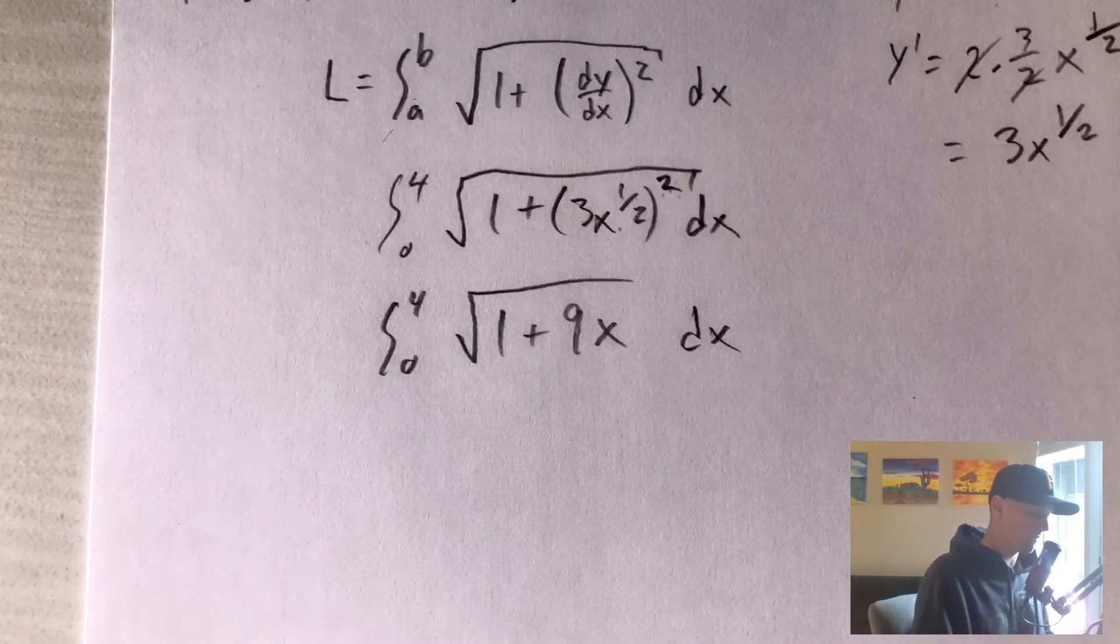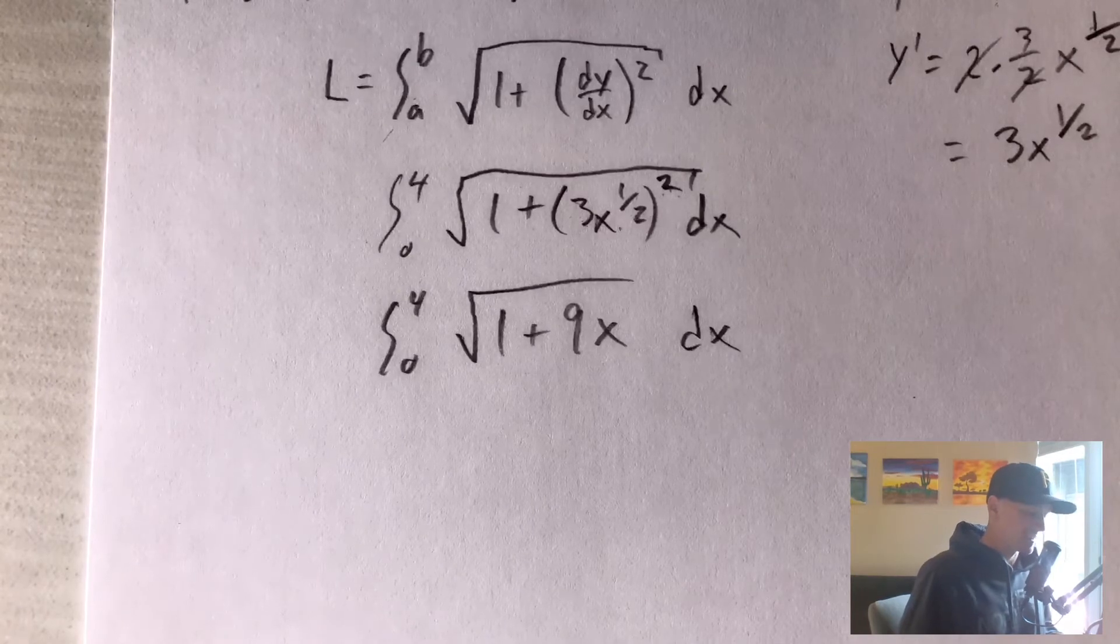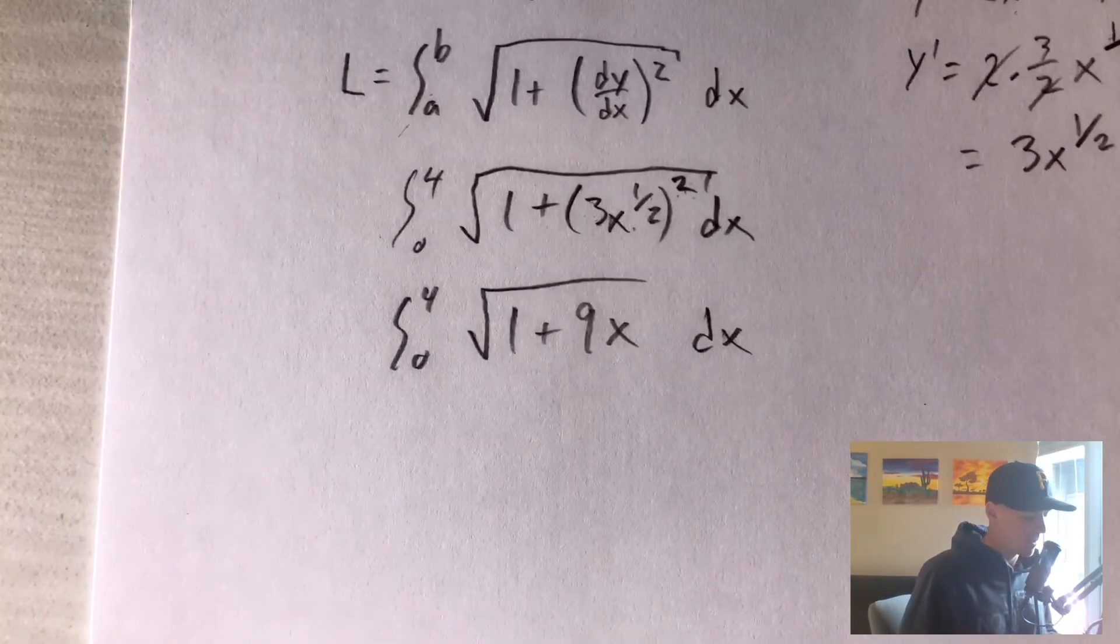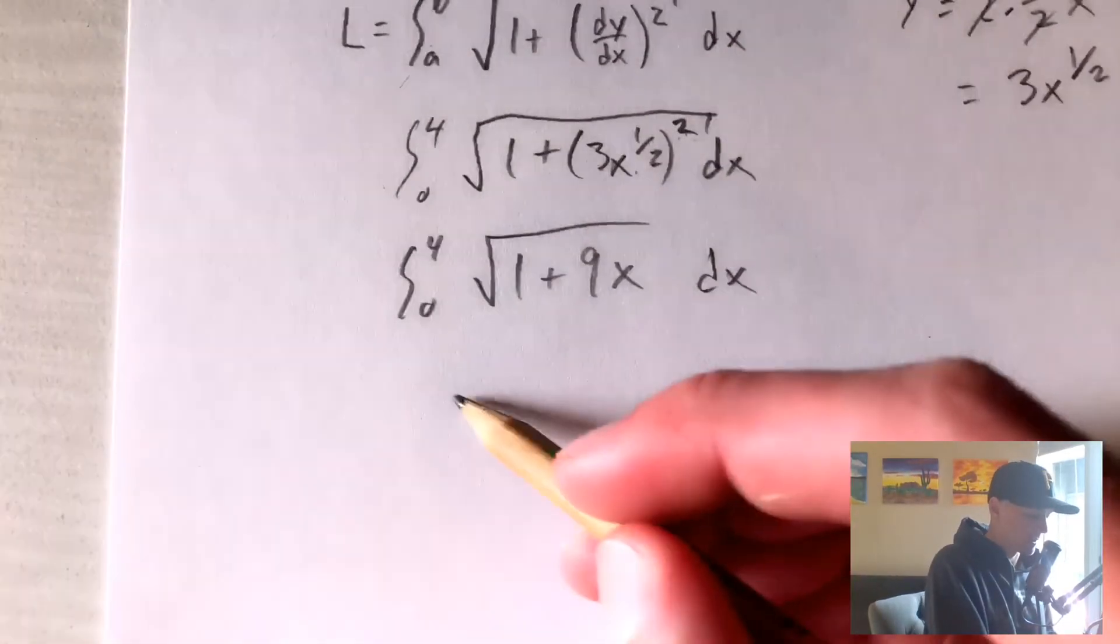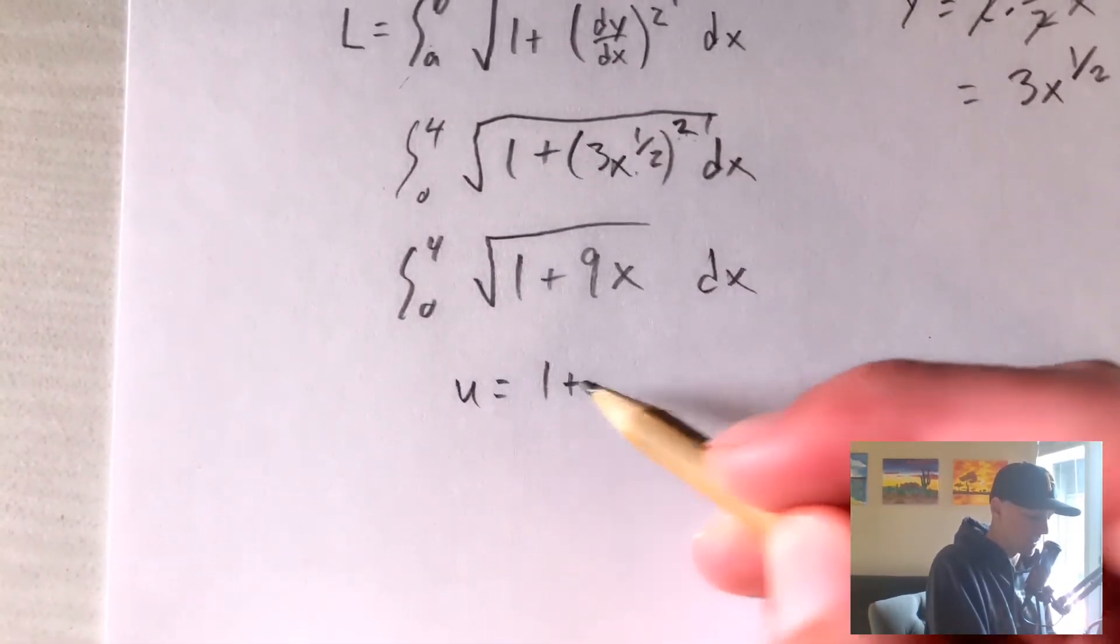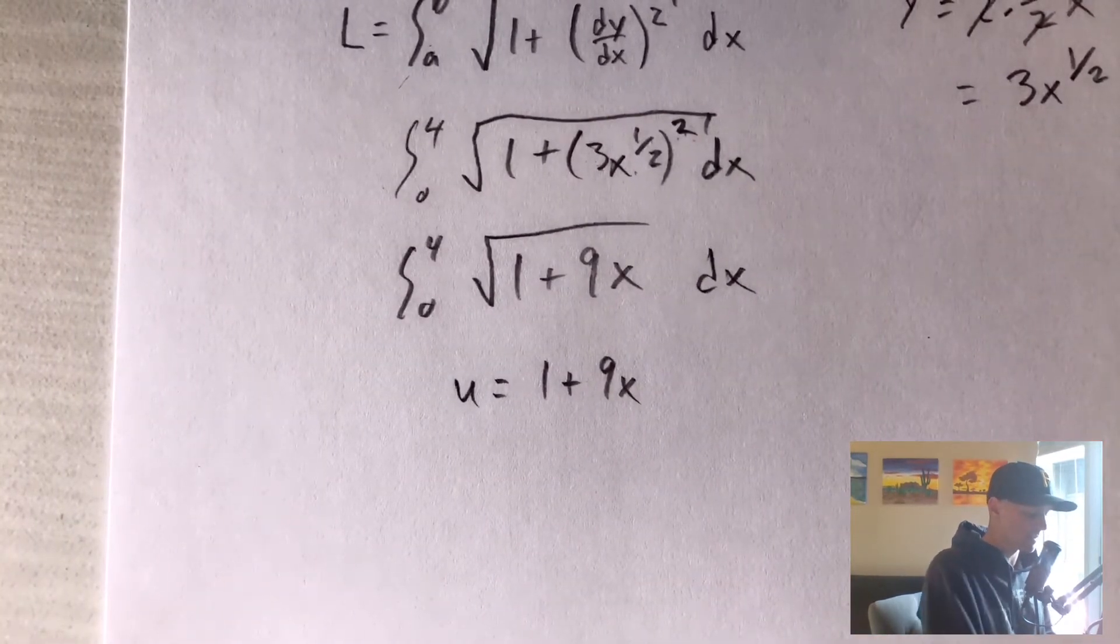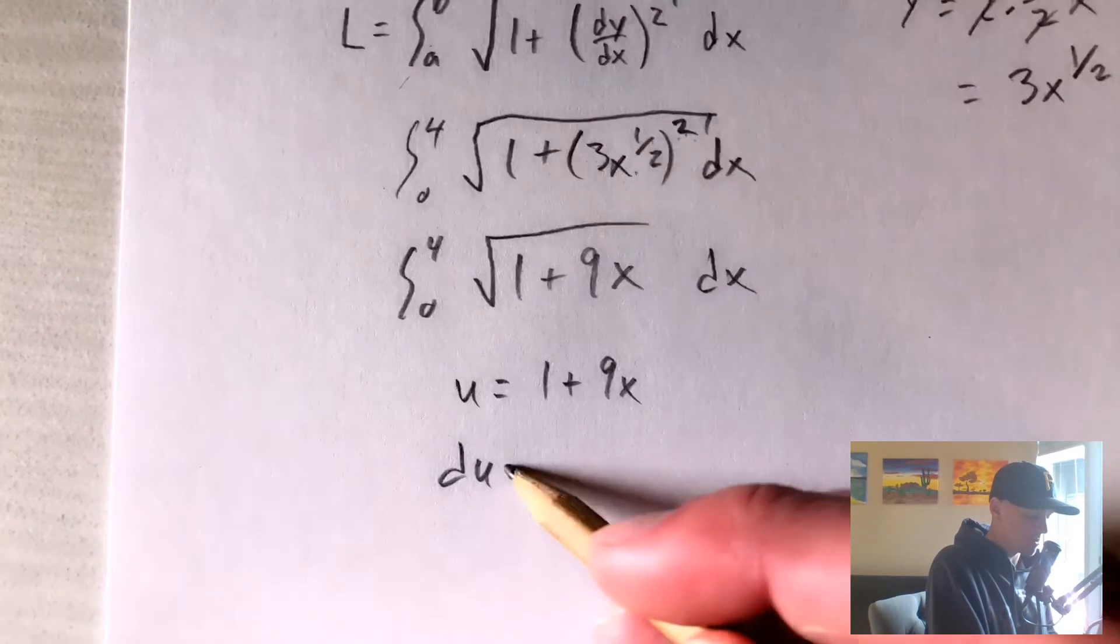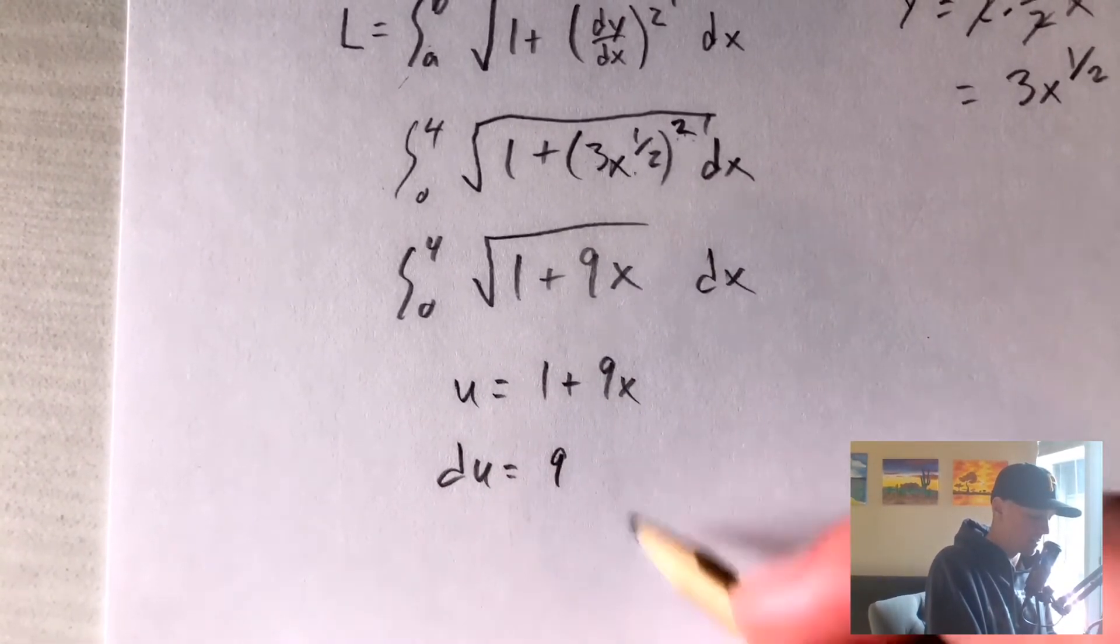So now we have this square root that we have to integrate, which, like I said, is not super convenient. Probably the best way to do this kind of a problem, though, is going to be with u substitution. So what we can do is we can just say u equals all the stuff that's inside the parentheses here. And the reason why this works out nicely is because now our du is just going to be the derivative of this function, which is just 9 times dx.